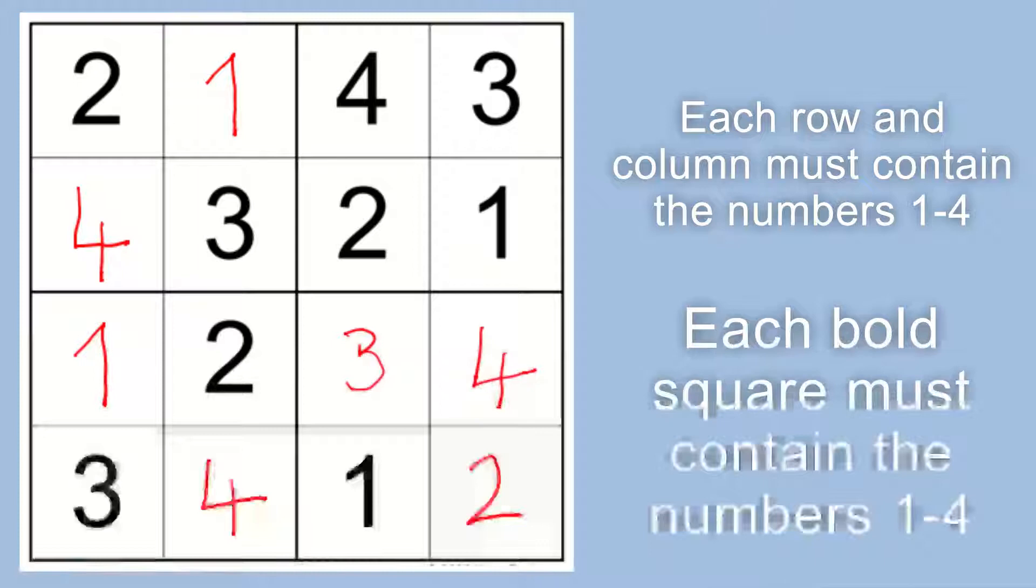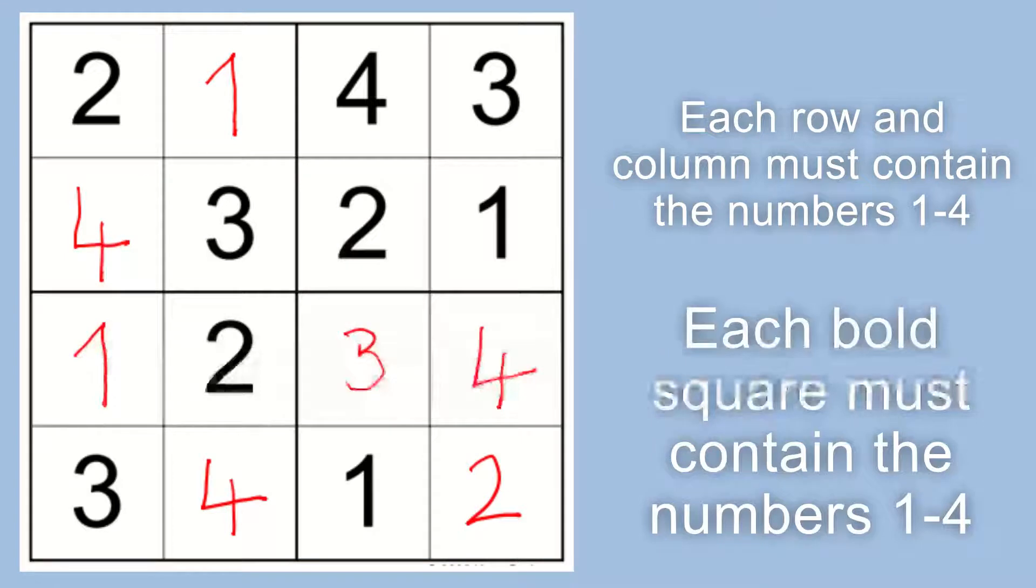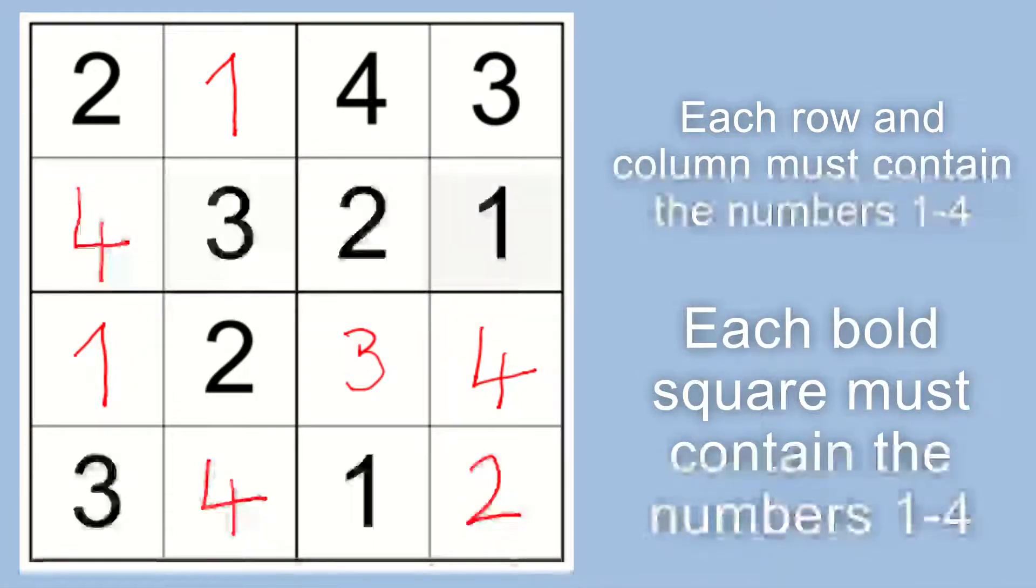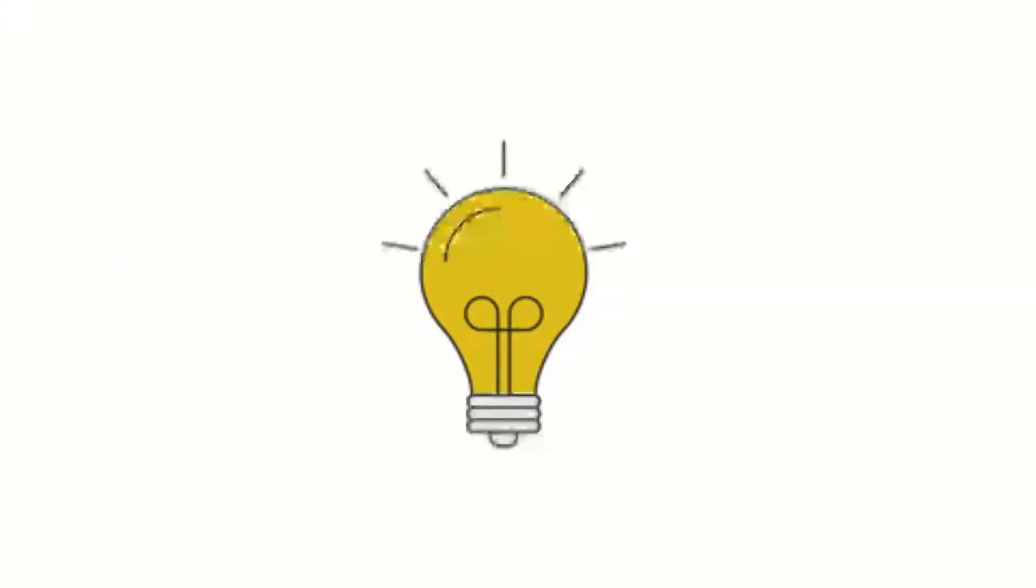You're going to see the same grid that you saw this morning. As you can see, your mini Sudoku puzzle - I've placed the numbers into the appropriate squares. Each of the rows and columns now has the numbers one to four, and each of those little bold squares also contains the same numbers one to four.